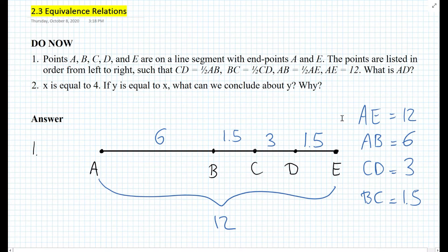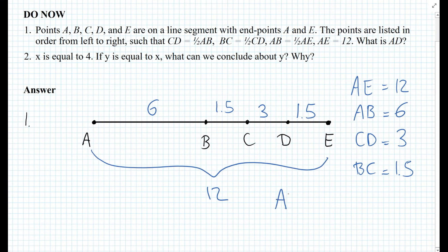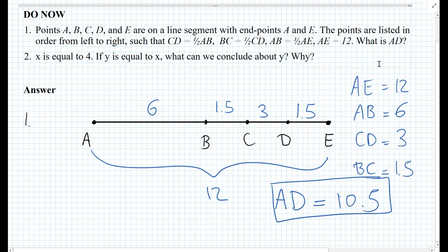So we found the distance from A to D. From A to D, we add up the distances of 6, 1.5, and 3, and the distance is 10.5. That is the answer — 10.5. So let's go over to the second question.